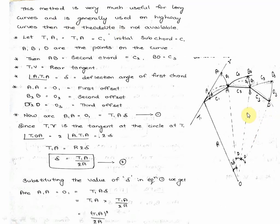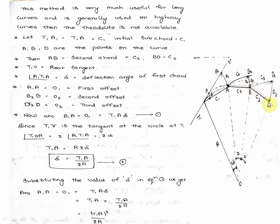Let T1A1 equal to T1A, that is C1, the first chord. The first chord C1 is called the initial sub-chord, and the last chord is called the last sub-chord. The intermediate chords are called normal chords. Points A, B, D are the points on the curve. AB is the second chord denoted as C2, and BD is the third chord equal to C3.